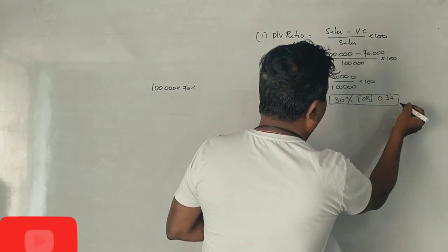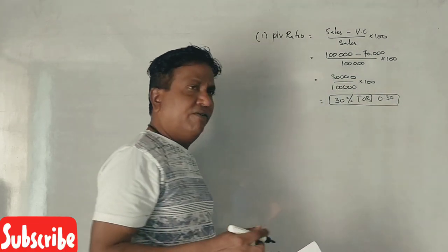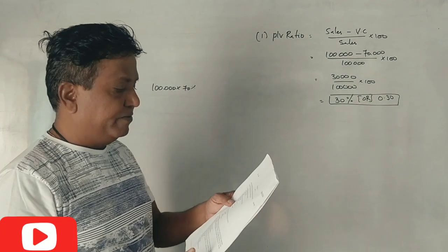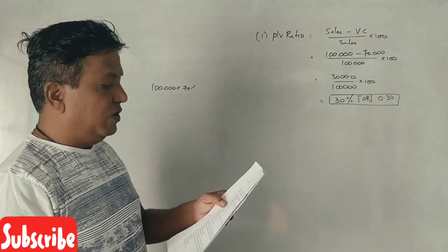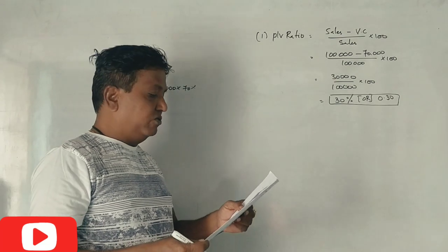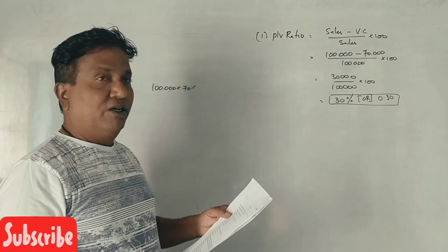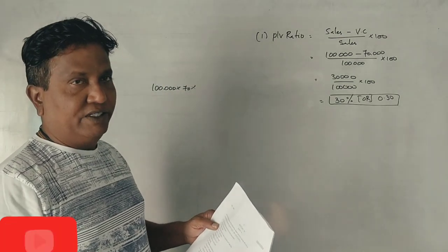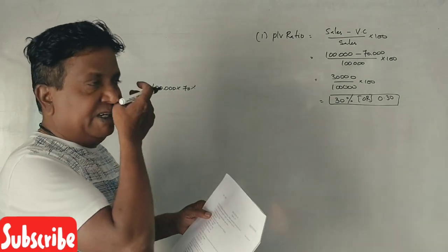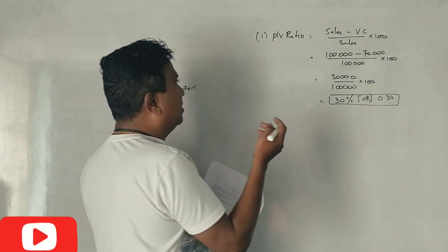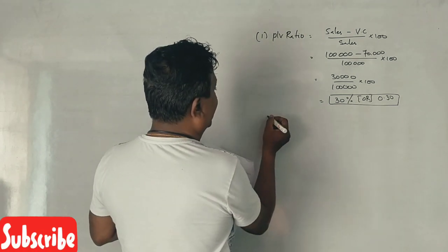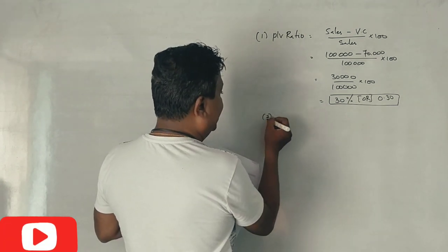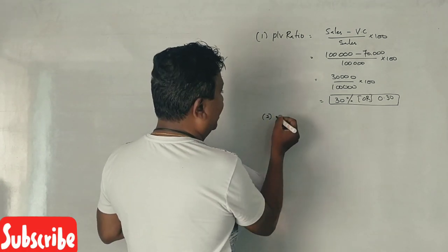So 30 percent is the answer for the first question — the PV ratio. Now the second question: what is the fixed cost? Let us calculate the fixed cost.